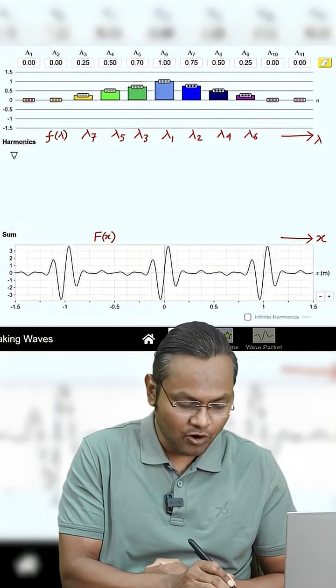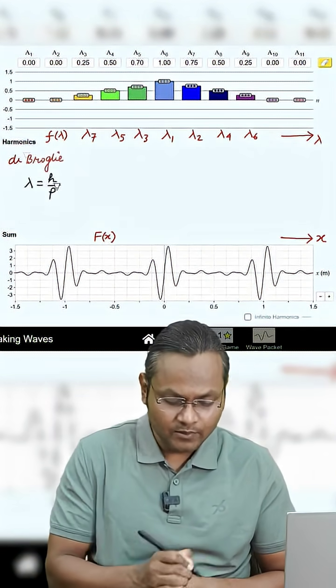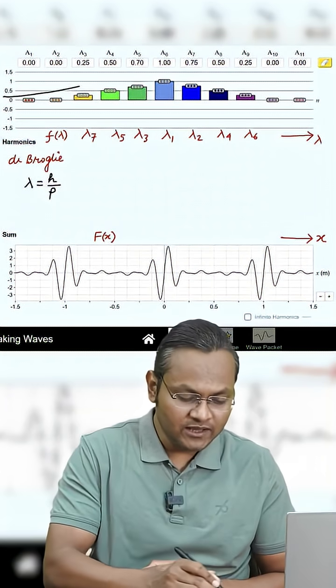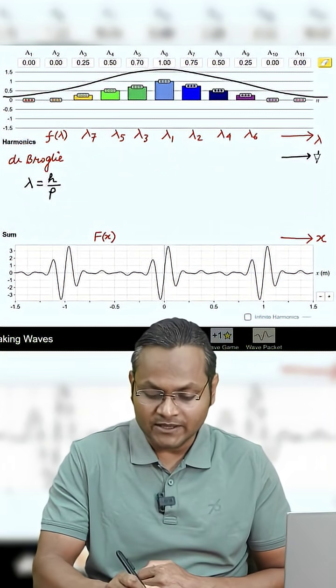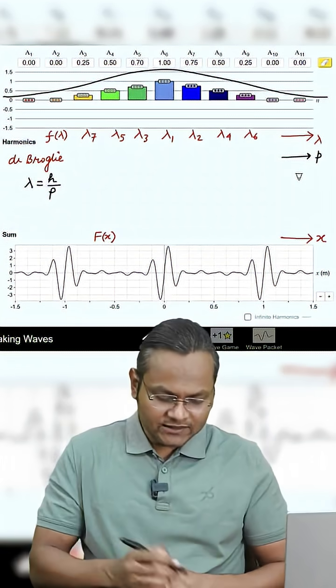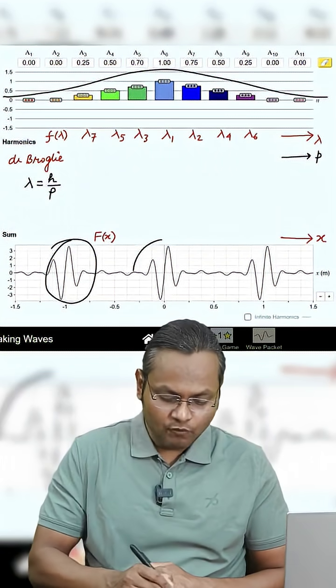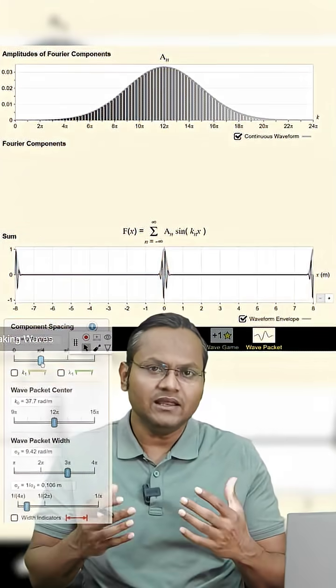आप लोग को पता है that lambda has something to do with momentum. This is the de Broglie hypothesis. So इसका मतलब यह जो distribution आपको दिख रहा है, this distribution is also with respect to momentum of the particle. Now here we can see some repetition of wave packet जो मुझे नहीं चाहिए.